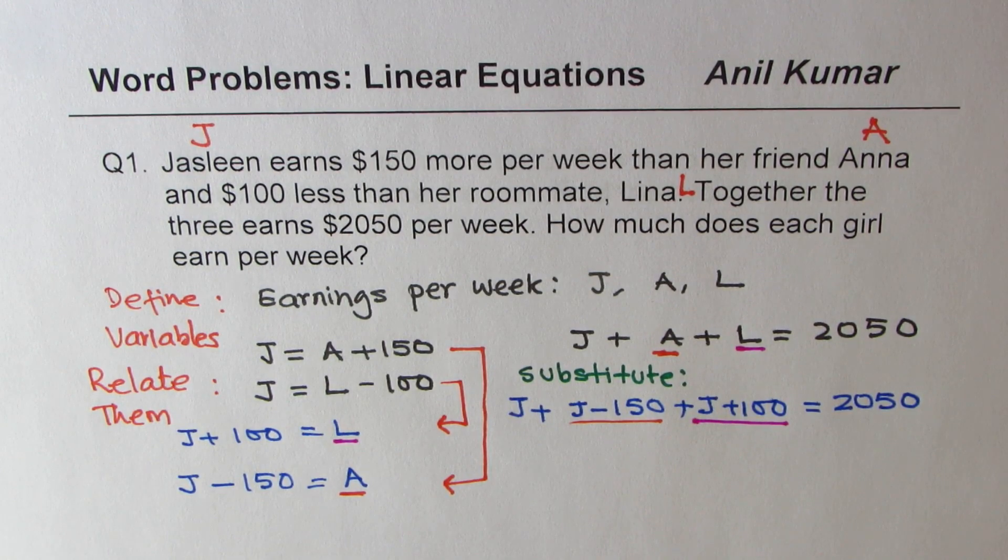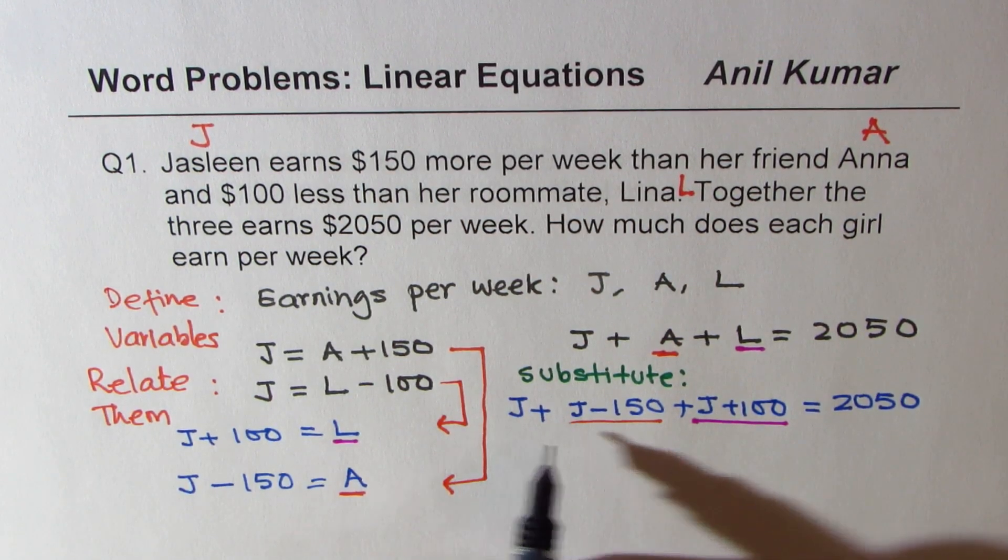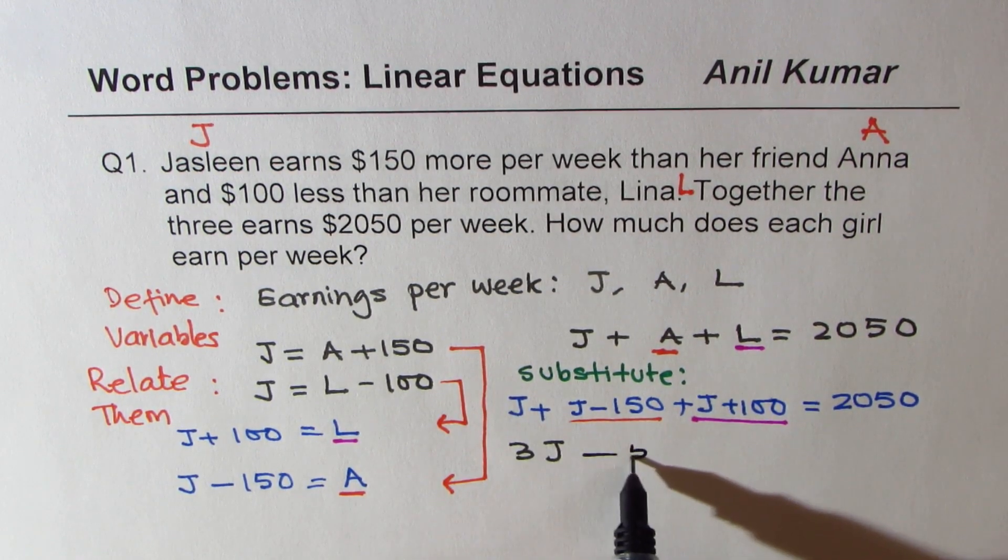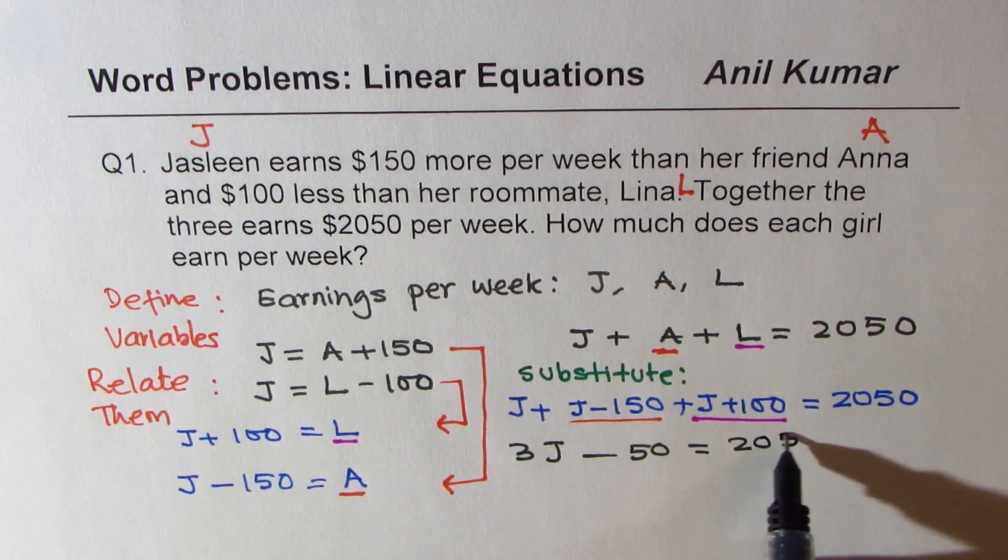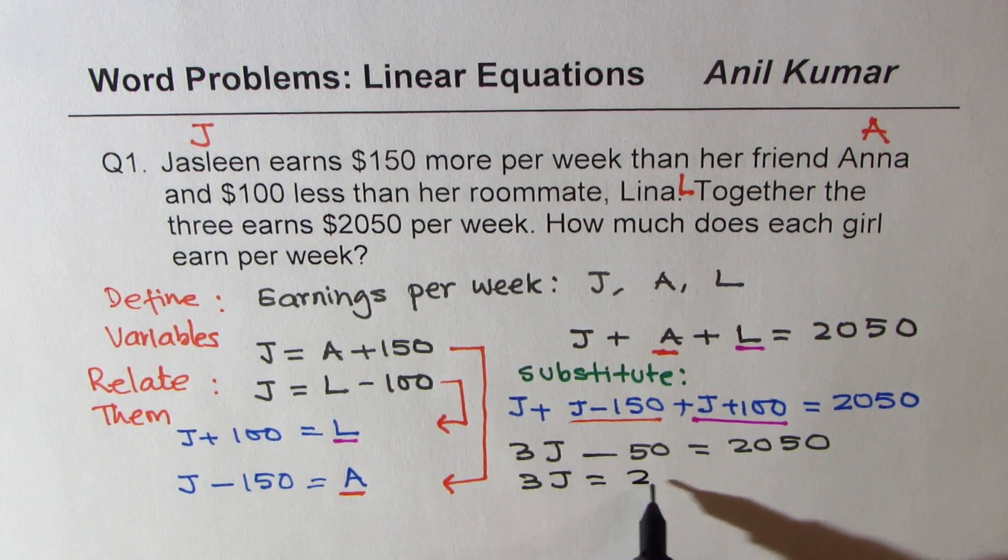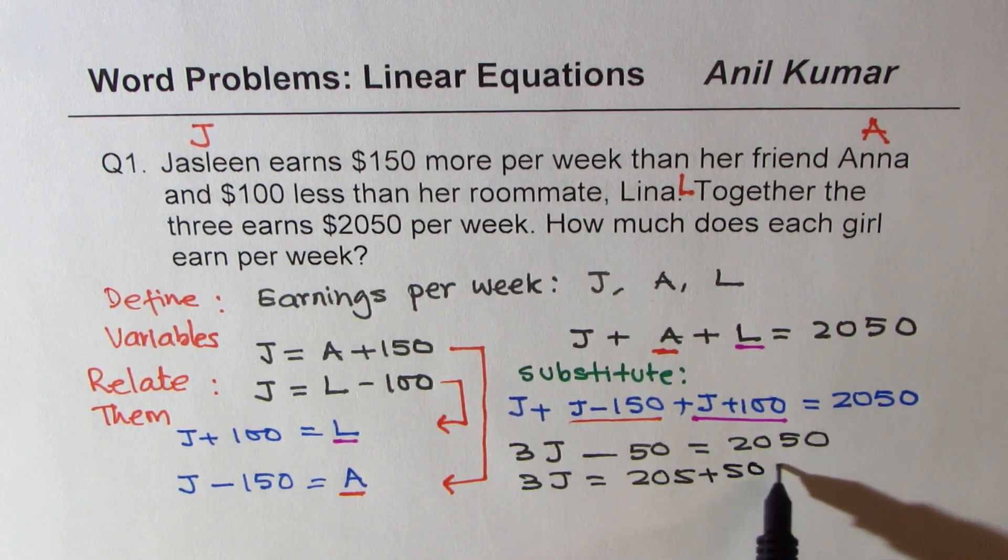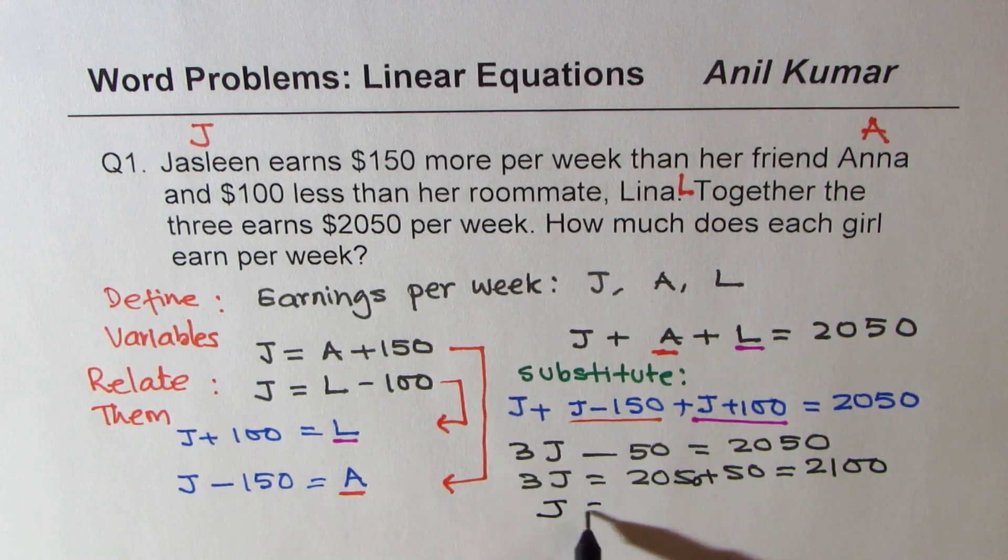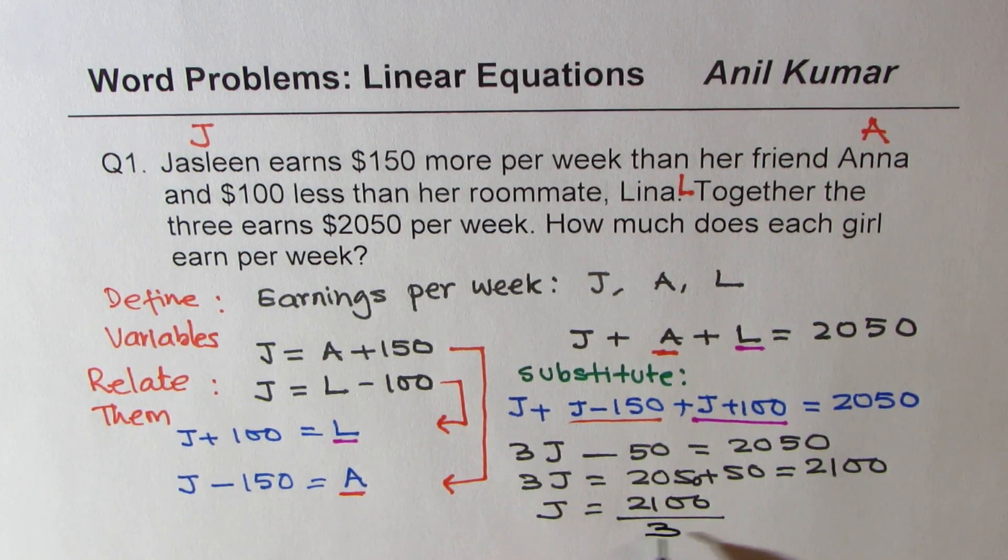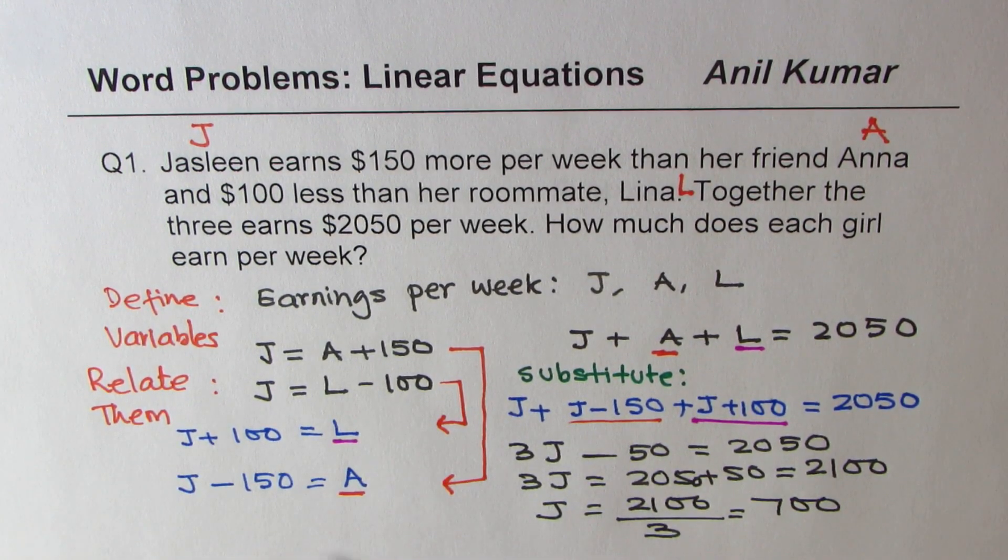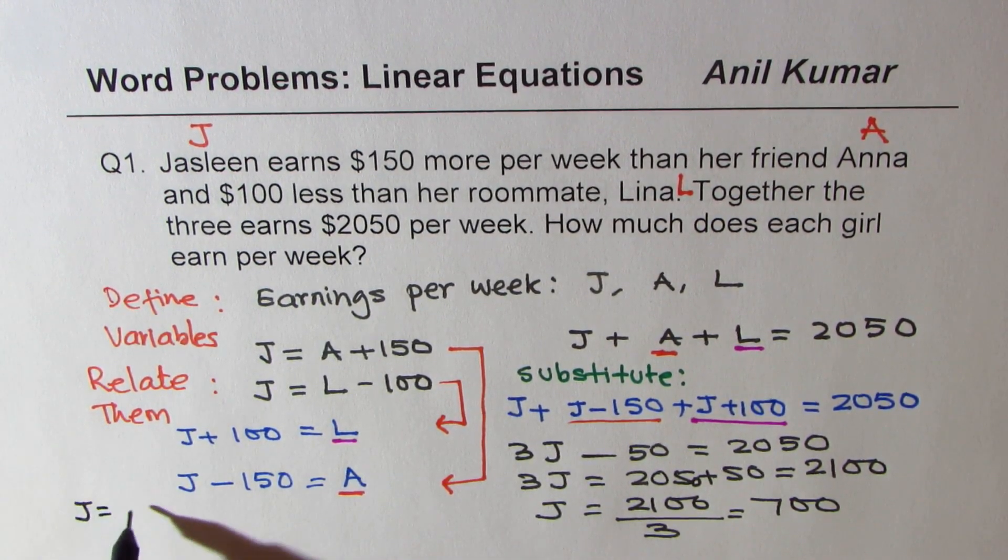What we got was one equation just in one variable. So we started with three variables, now we have just one variable J. Combining we get 3J minus 50 equals 2050. Taking this on that side, we get 3J equals 2050 plus 50, which is 2100. So J equals 2100 divided by 3, which is 700.